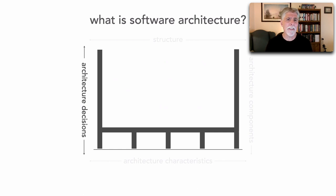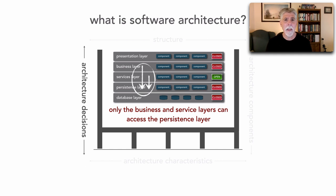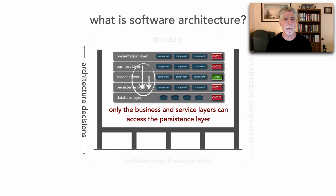The third dimension is architecture decisions — such as this one here: in a layered architecture, I made the decision that only the business and services layer can access the persistence layer. I make this decision so that I can control change, so that the presentation layer does not have to change when I change the database. These are architecture decisions that form the principles and add to the structural aspects as well.